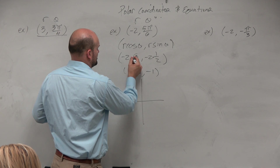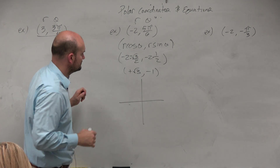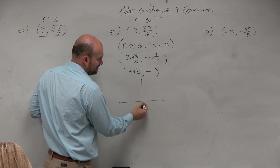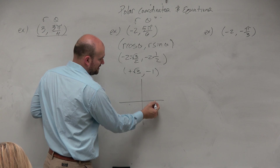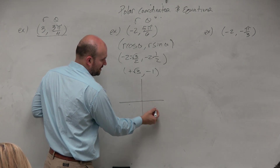Wait — that's in the second quadrant. That should have been negative, so that's actually positive. So it's positive square root of 3, then down 1.